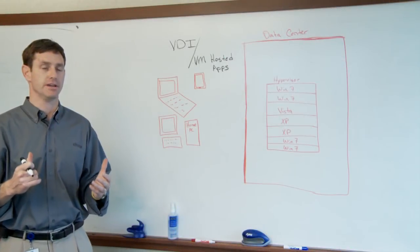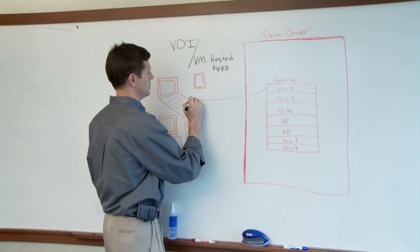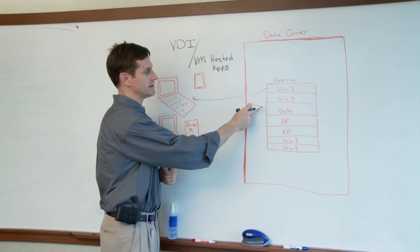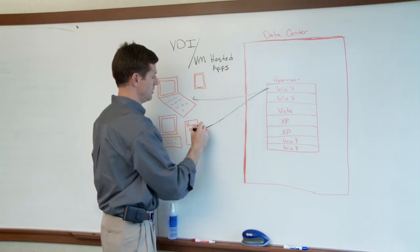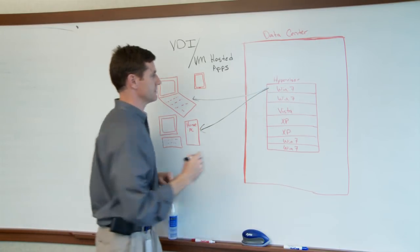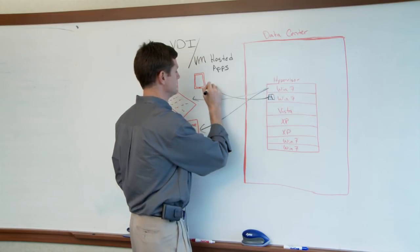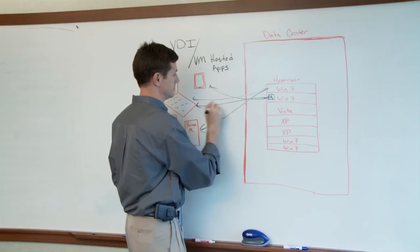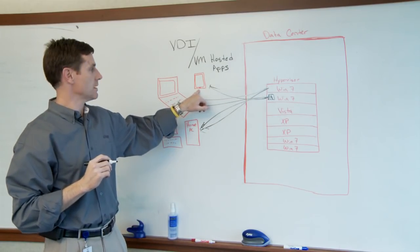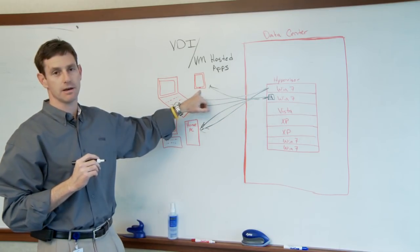ZenDesktop VDI allows IT to deliver client OSes from virtual machines running on a hypervisor in the data center to any device on the LAN, across the internet, or across the WAN. VM hosted apps gives Citrix ZenDesktop the ability to deliver just the application from a VDI desktop session to any device. For example, a tablet might want to leverage just the applications from a VDI environment instead of the entire desktop.